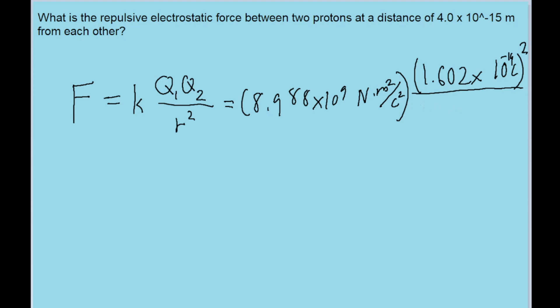This is divided by the square of the distance between them, which the problem gives us as 4.0 times 10 to the power of negative 15 meters. That's squared too, because it's an inverse square law. If we put this into our calculator,